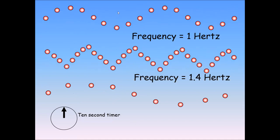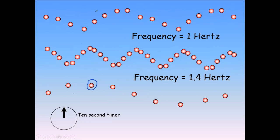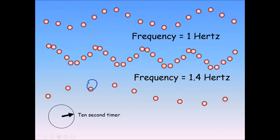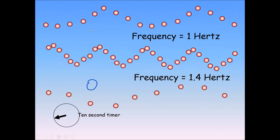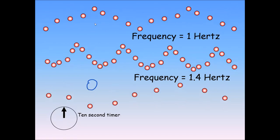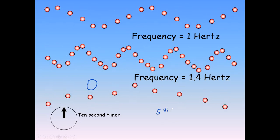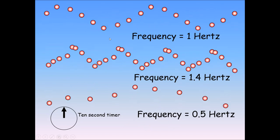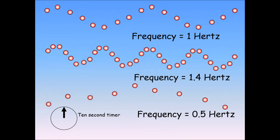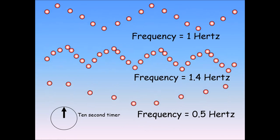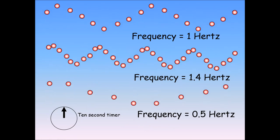For the last example, focus on one point: one, two, three, four, five — there are five vibrations in 10 seconds. The frequency is the number of vibrations divided by time: 5 ÷ 10 = 0.5 hertz. So this wave undergoes 0.5 vibrations, or half a vibration, every second. Frequency means how many times the particles are moving or vibrating every second, or how many complete oscillations there are every second.